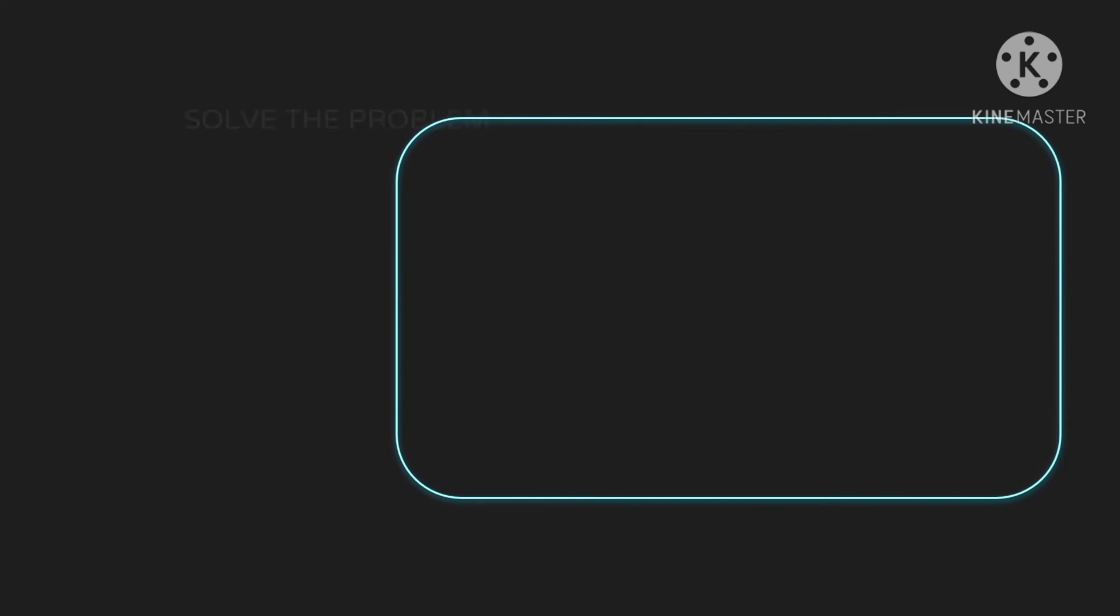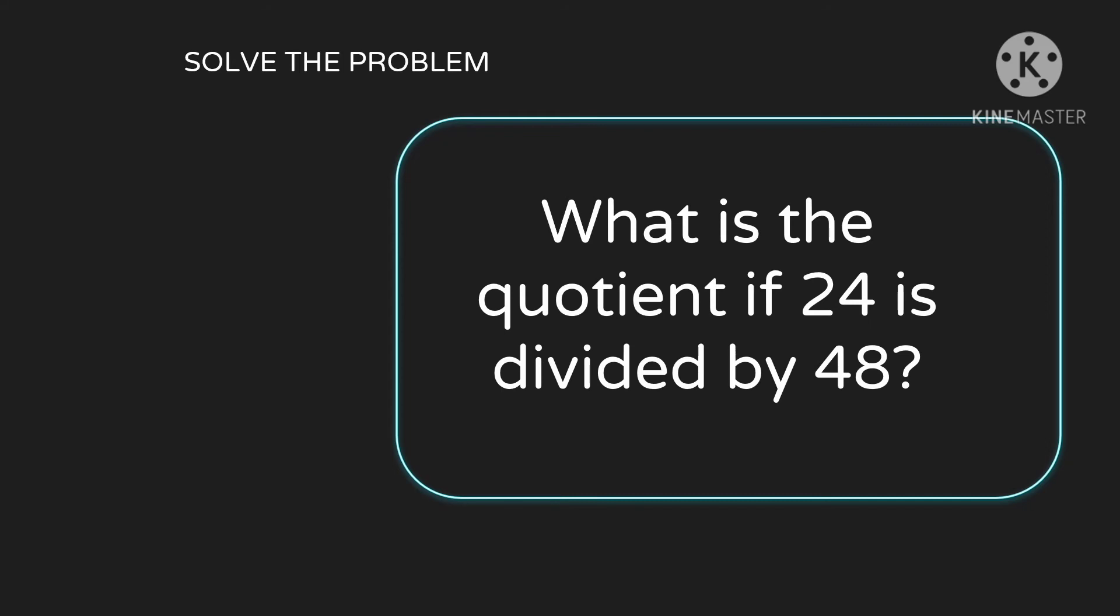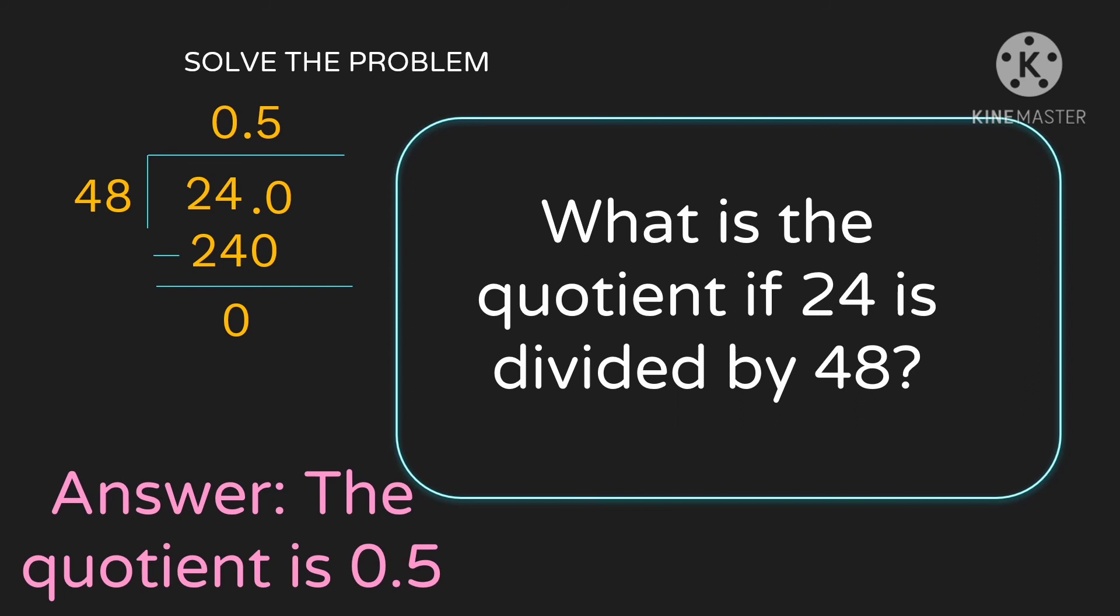Let's apply division to solve this problem. What is the quotient if 24 is divided by 48? 24 divided by 48 is not possible directly. We add decimal point and 0 to the dividend. 24 divided by 48 is 0, then proceed to 240. 240 divided by 48 will give us 5. 5 times 48 is 240, subtract, 0. Again, the decimal point of the quotient is aligned with the decimal point of the dividend. The quotient of 24 divided by 48 is 5 tenths or 0.5.